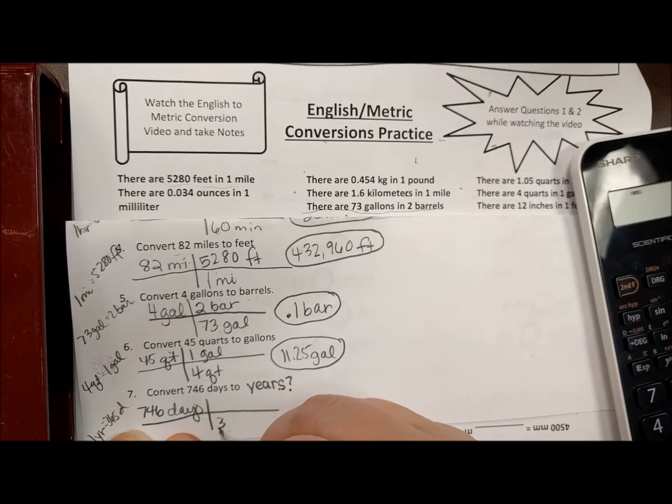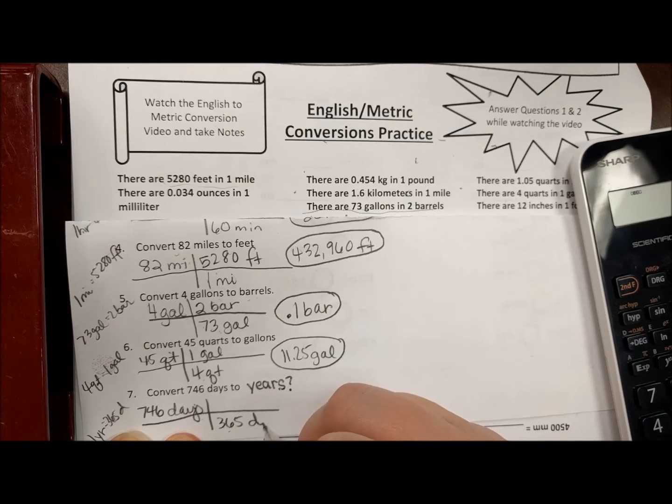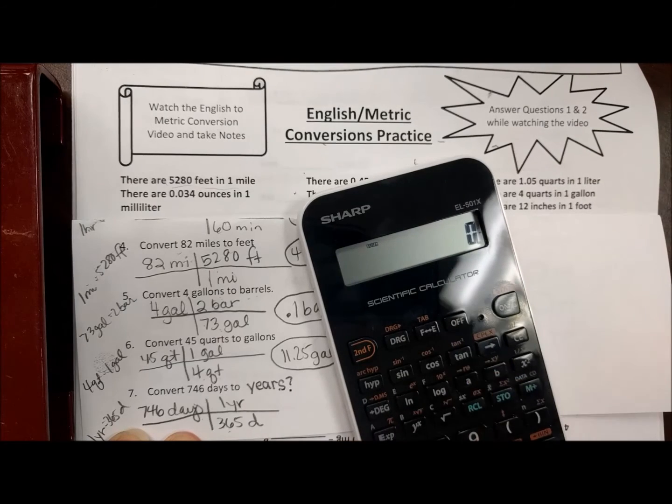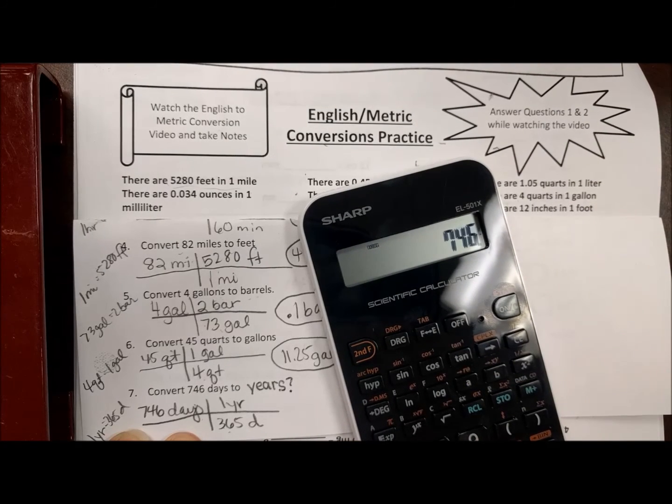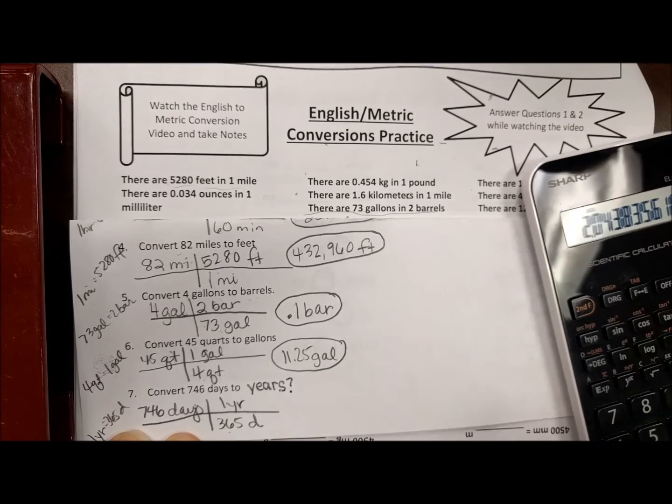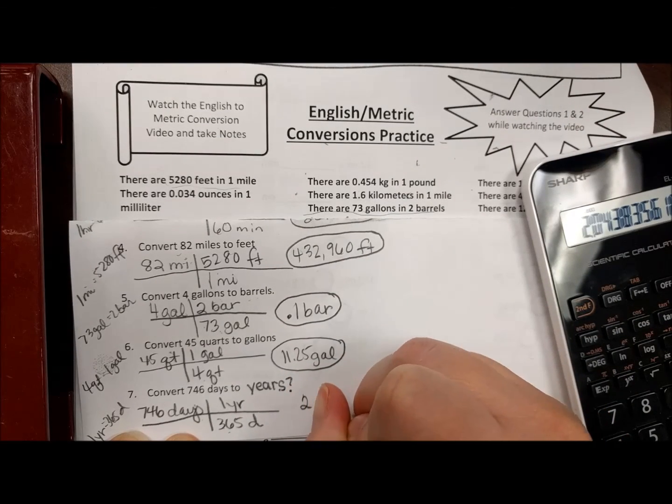So diagonally I have to put my days—365 days in one year. So we do 746 divided by 365, so it's just about two years.